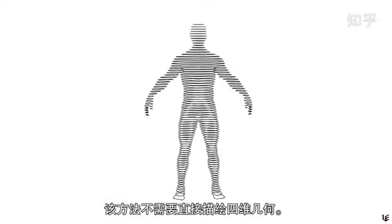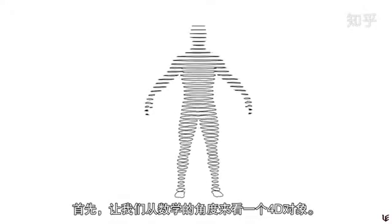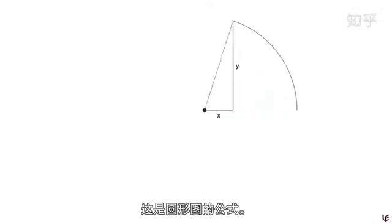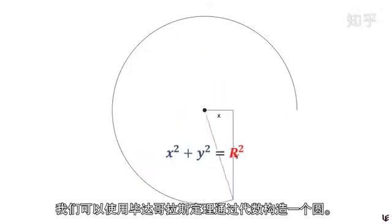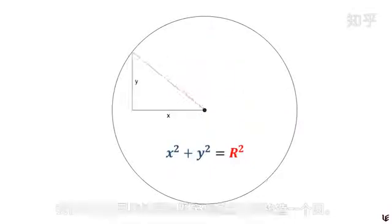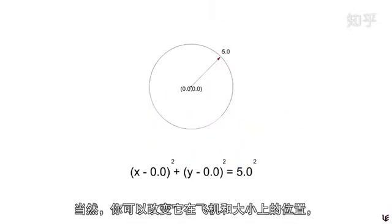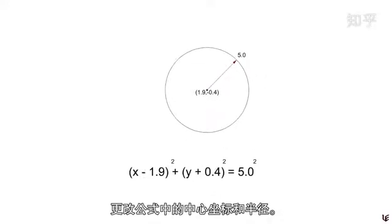First, let's look at 4D objects from a more mathematical point of view. Consider the formulation of a circle: we can construct a circle algebraically using the Pythagorean theorem, and of course we can change its location and size by changing its center coordinates and radius values.